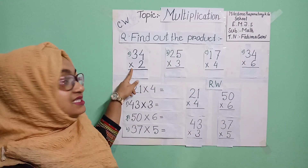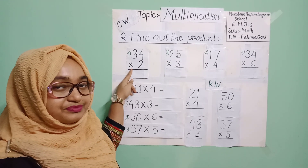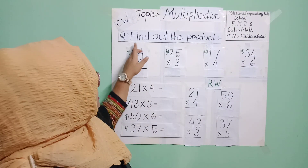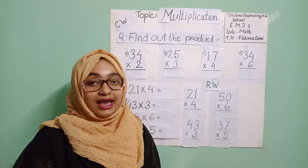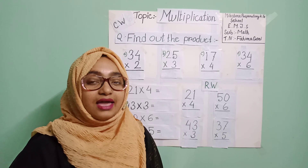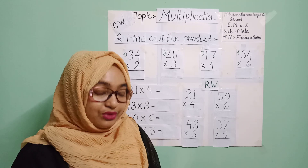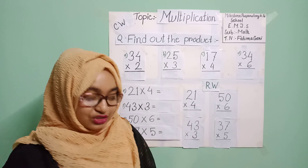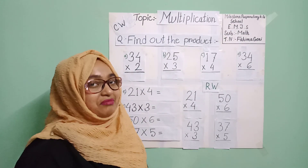The symbol of multiplication is the cross sign. Now, the question is 'find out the product.' Product is the answer of multiplication. Students, I know you have got all the information in your previous classes, so please now help me to do the math on the board.